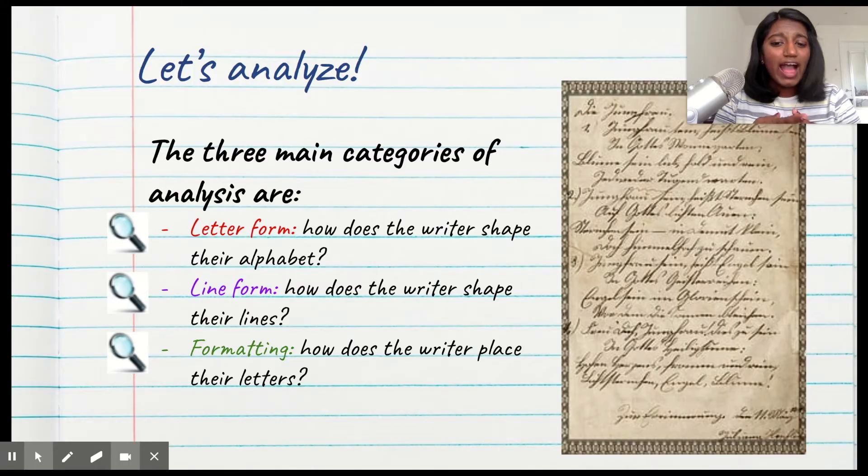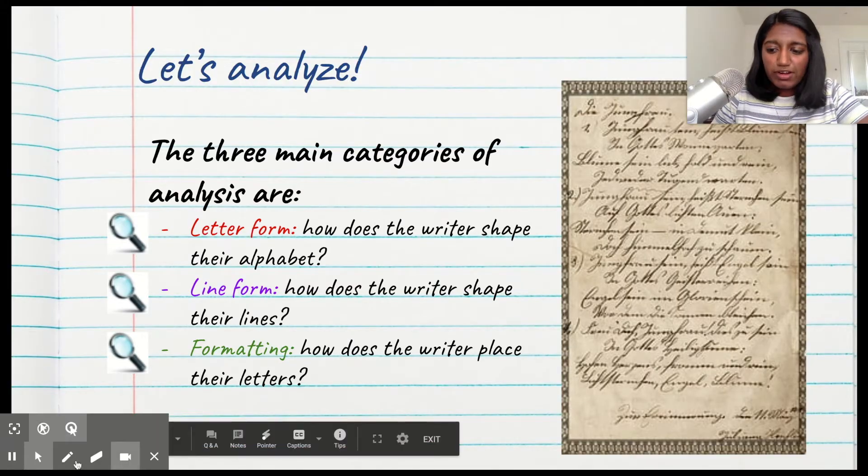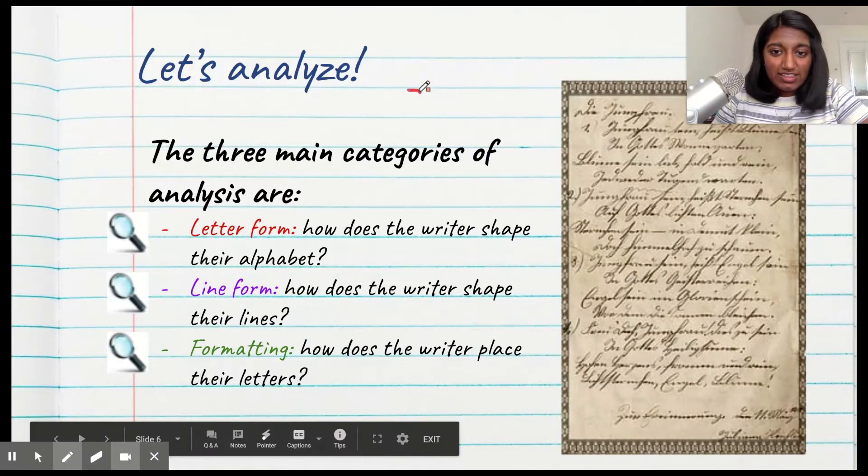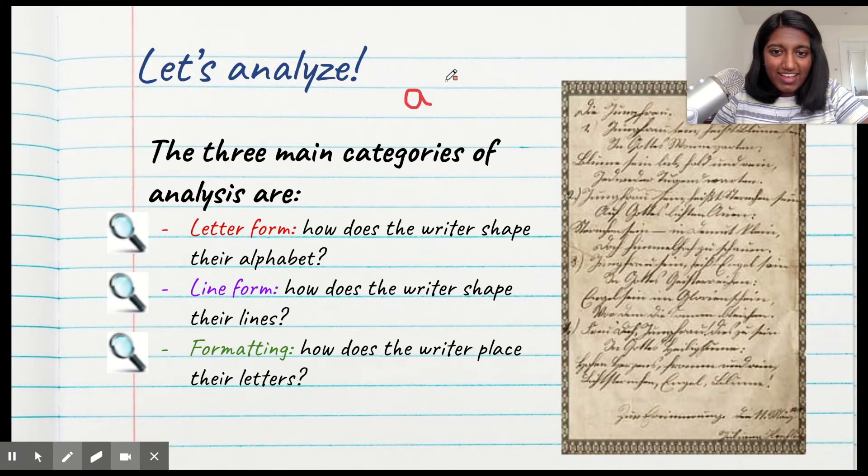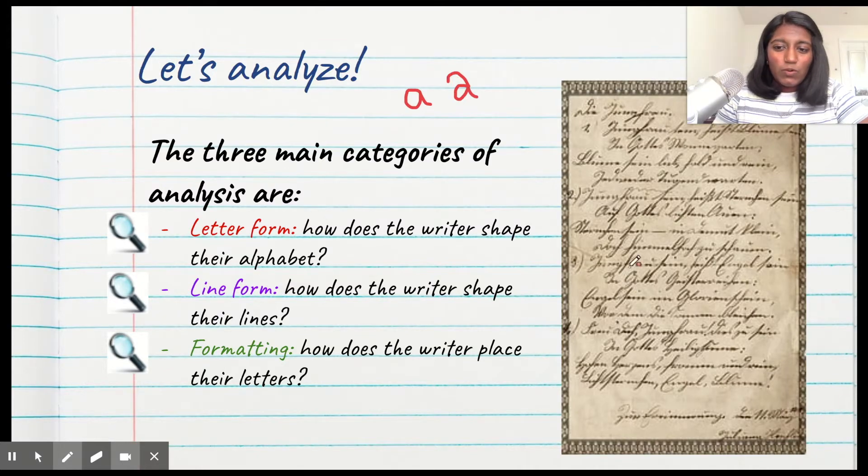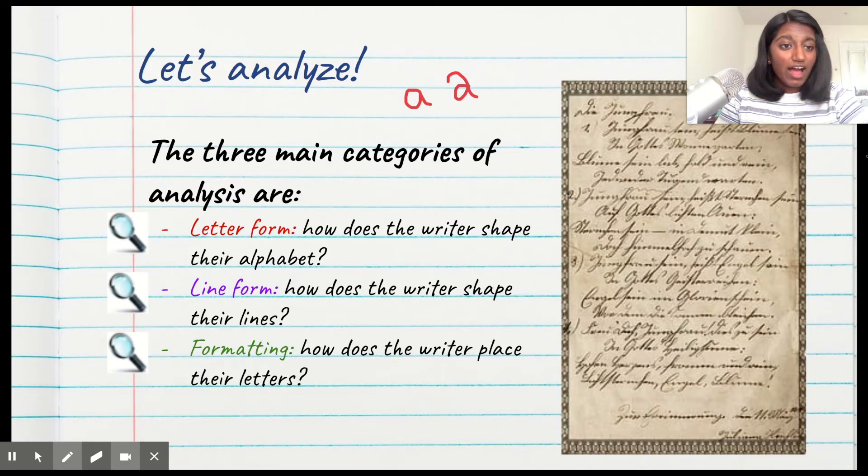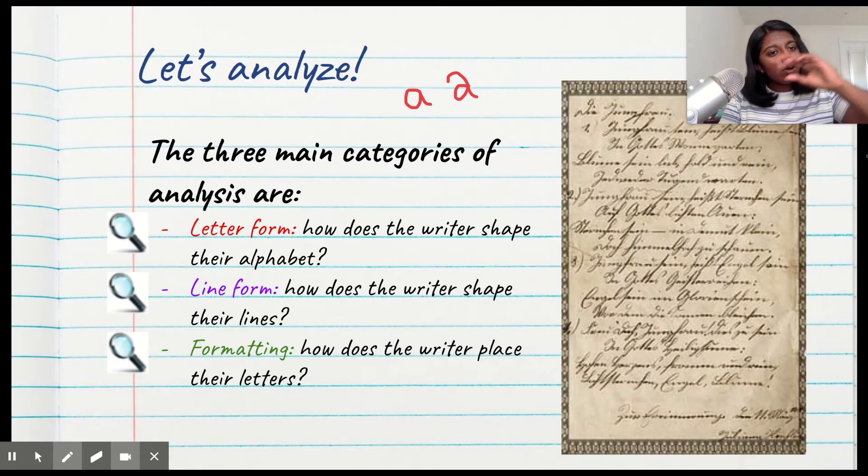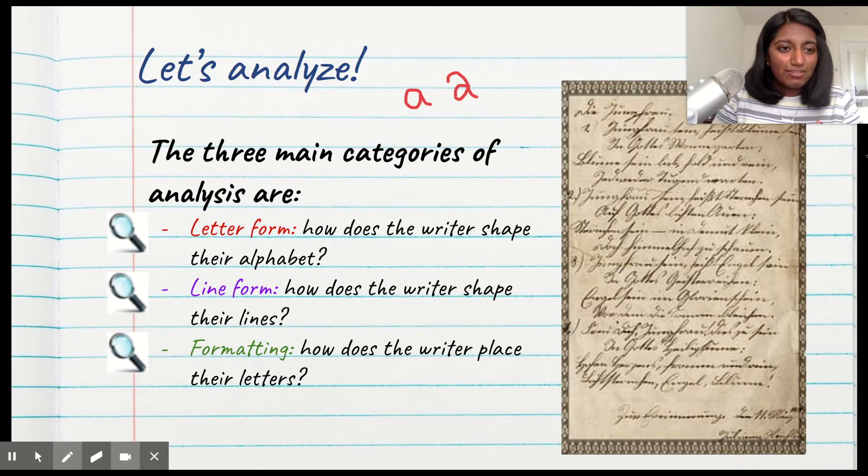Letter form means how does a writer shape their alphabet. For example, there are a couple of different ways to write an A—there's this version and then there's this version, right? Which one is it? That would be an example of letter form. Line form means how does the writer shape their line—does it stay on the same level, or does it float off or sink into it? Those are examples of line form.